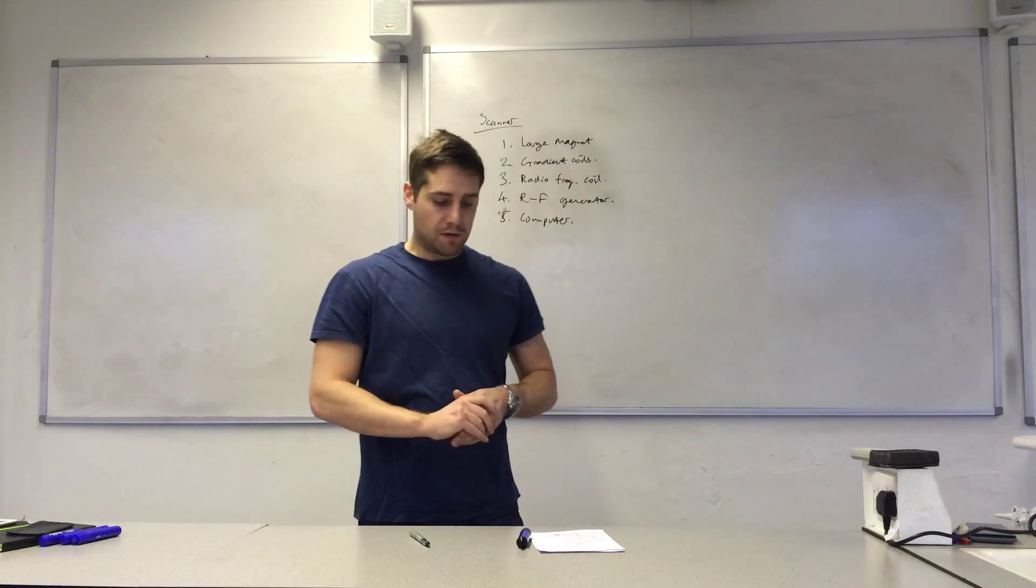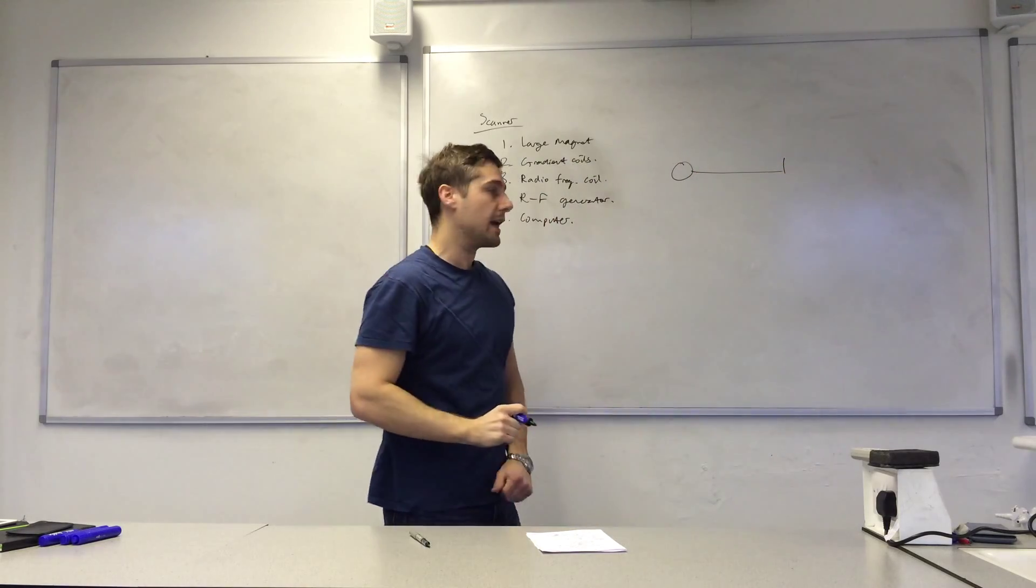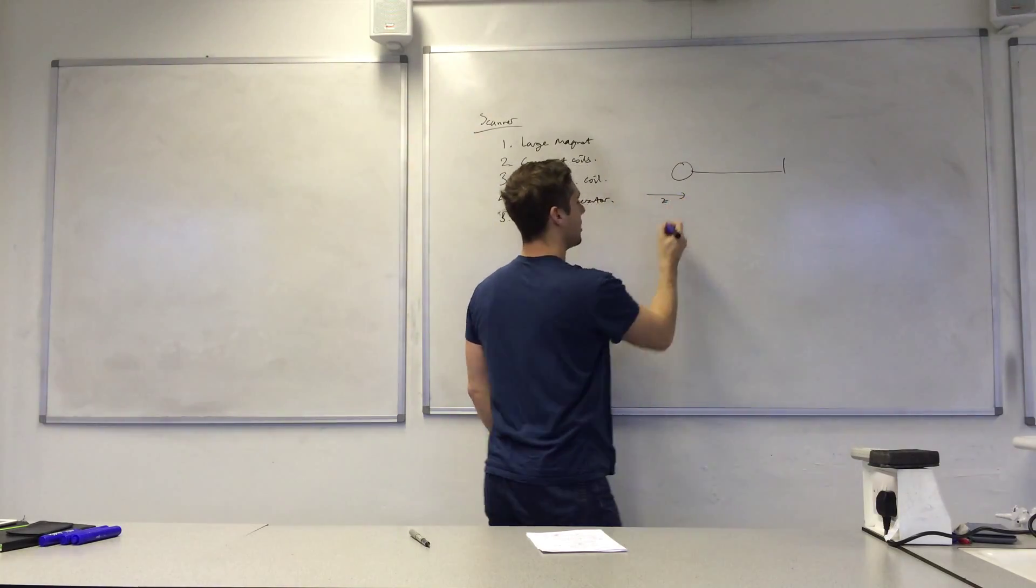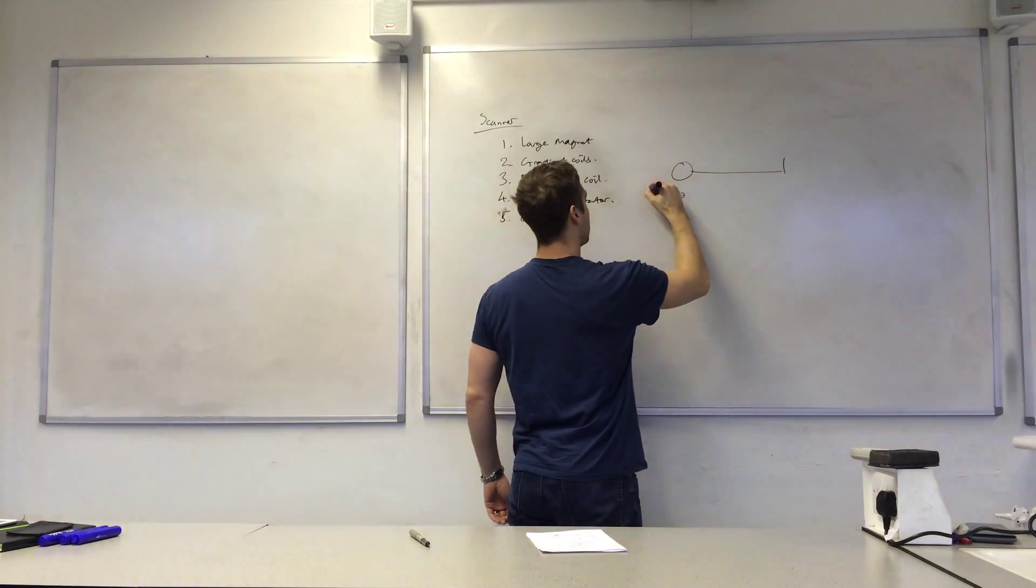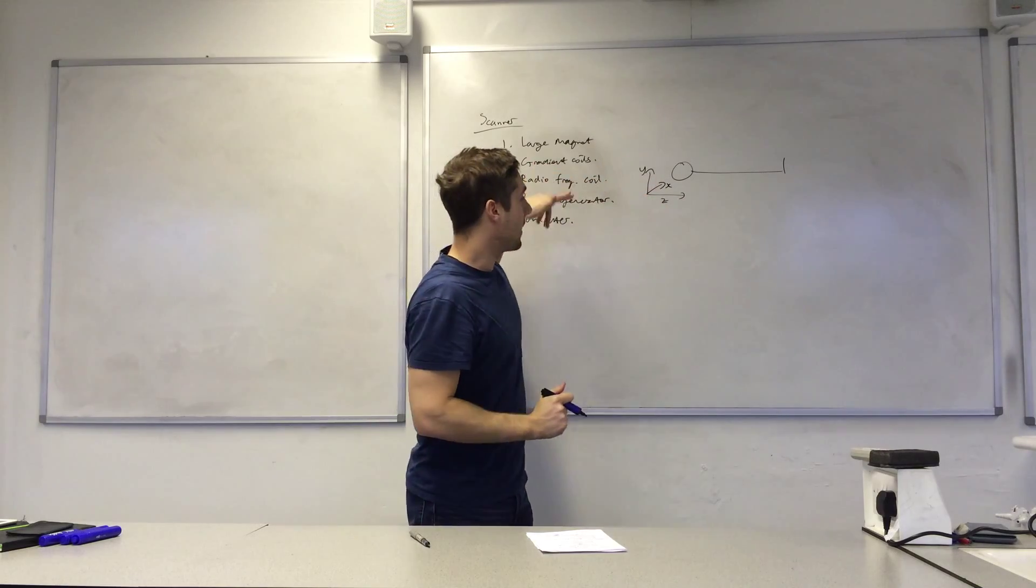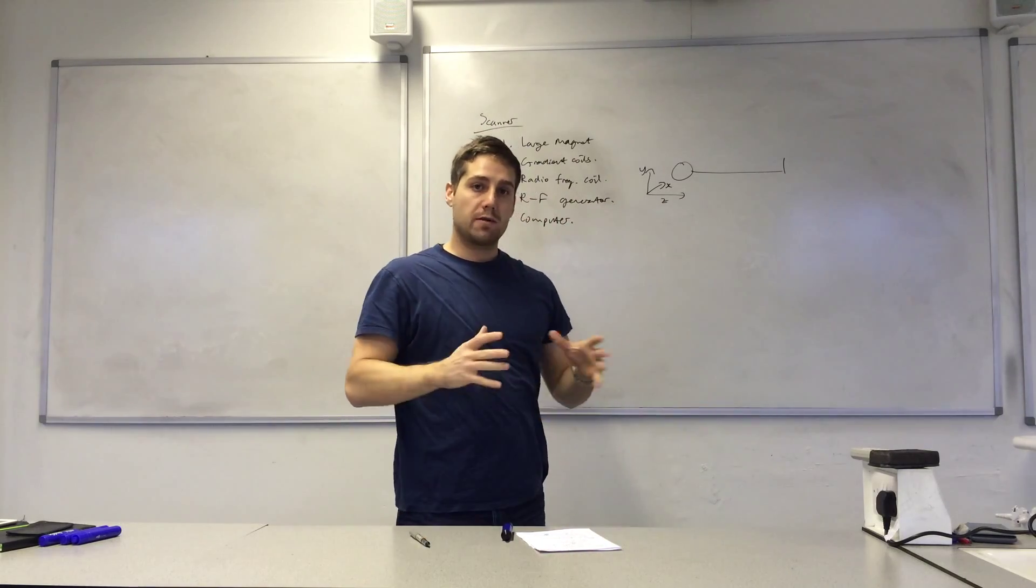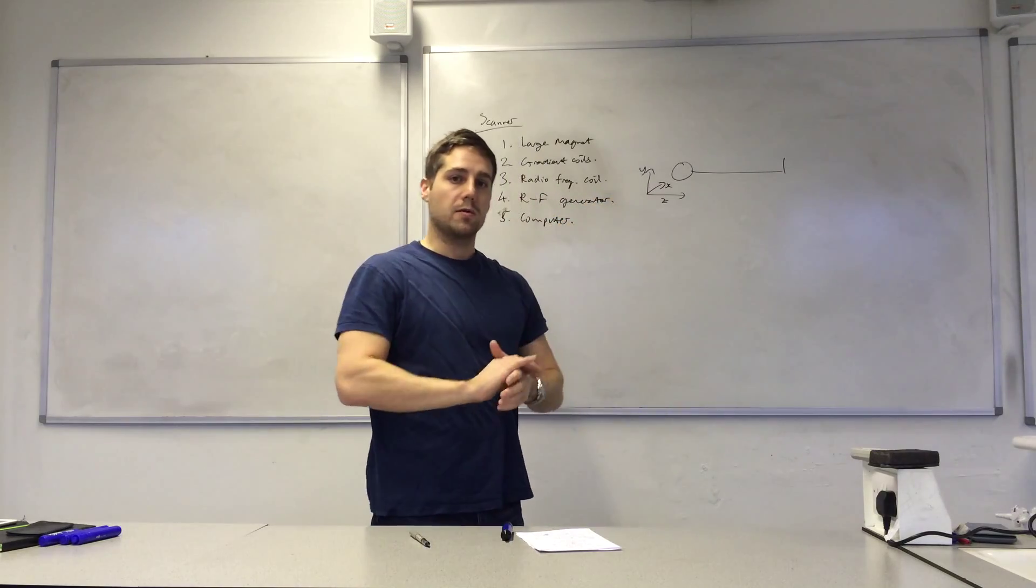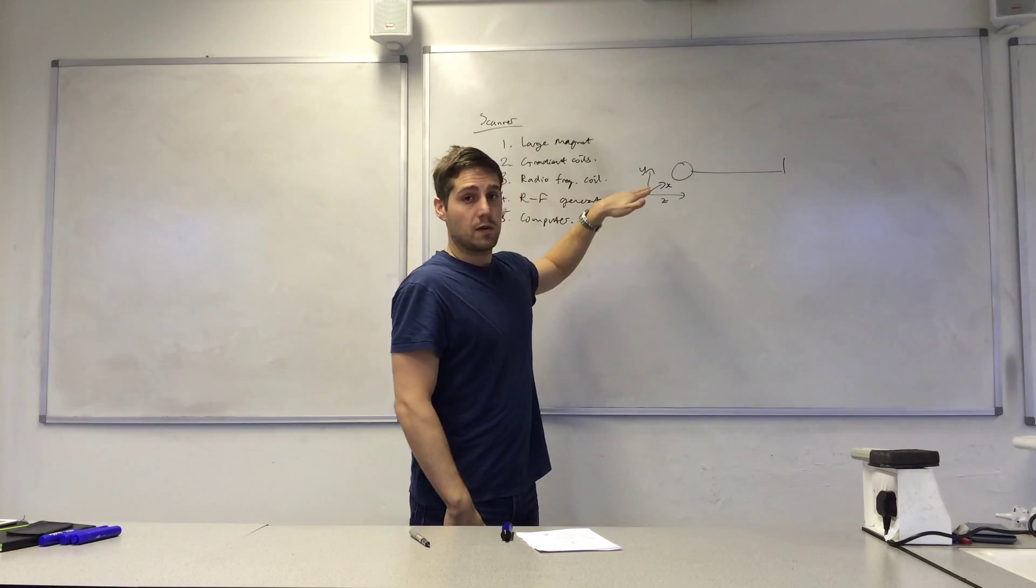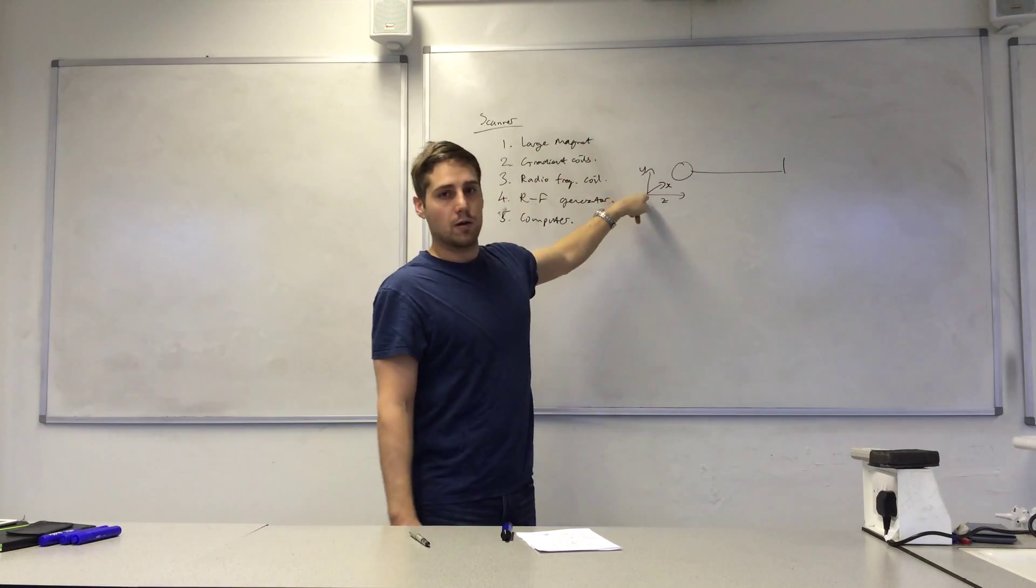We need something that can vary the field strength across the body. So, there's my patient in the scanner, and there are three dimensions here. Usually z is along the body, and then y is the height, and x is the width, so that's into the plane of the diagram there. And one of these components varies the field strength in that plane, or in that direction, along that axis, and along the x-axis.